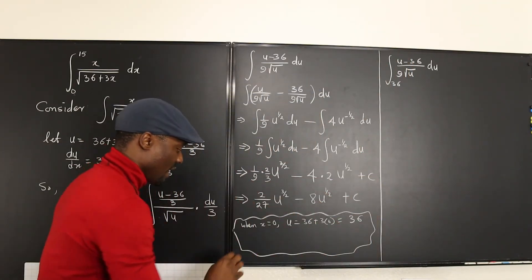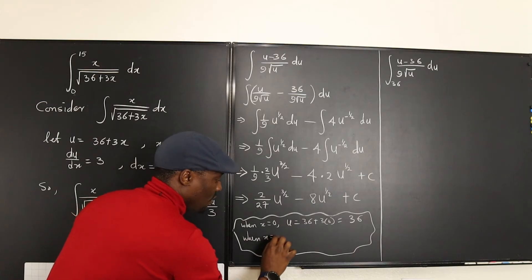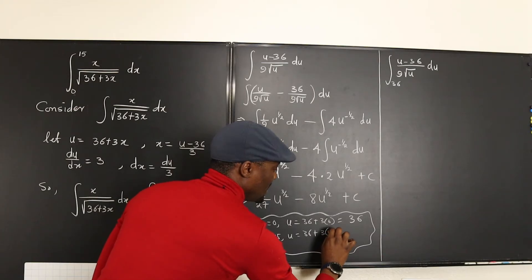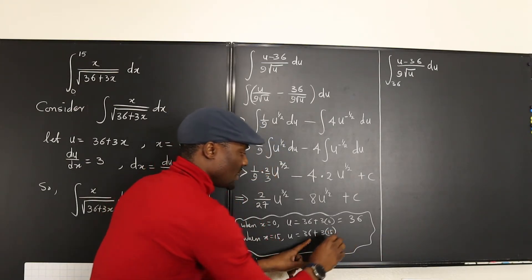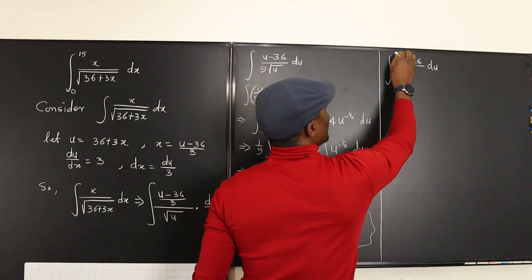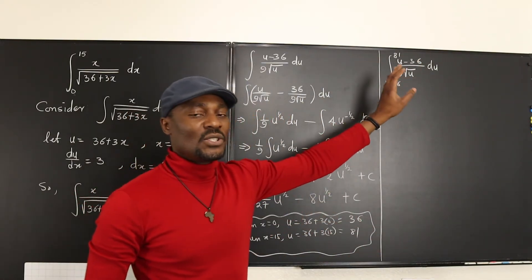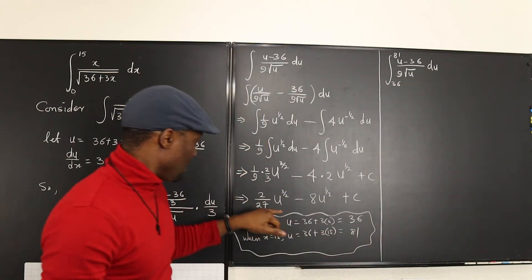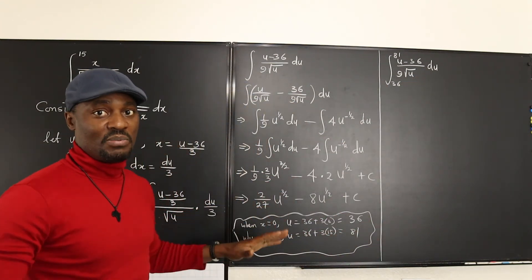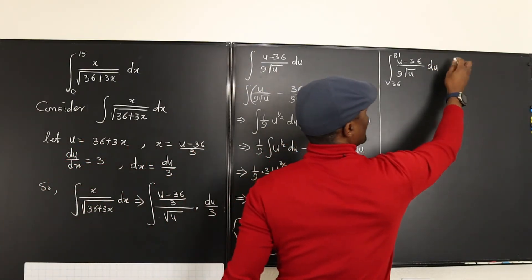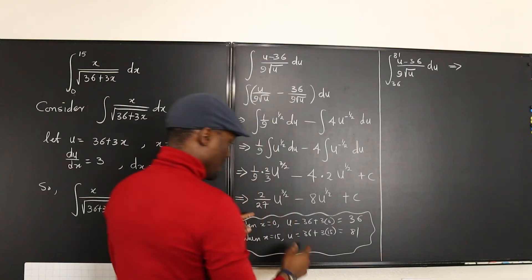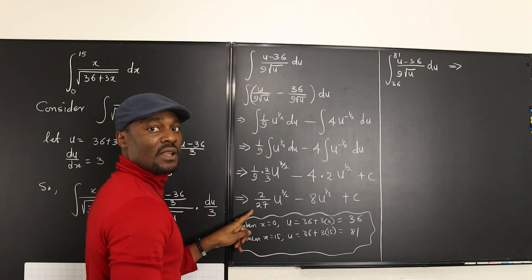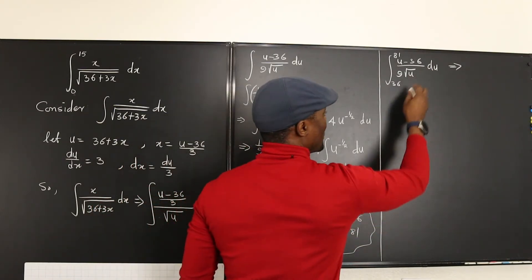For the upper boundary, when x equals 15: u equals 36 plus 3(15) equals 36 plus 45, which gives 81. So the upper boundary is 81. Never forget to convert your boundaries, because plugging 0 and 15 directly into the u-expression would be incorrect.